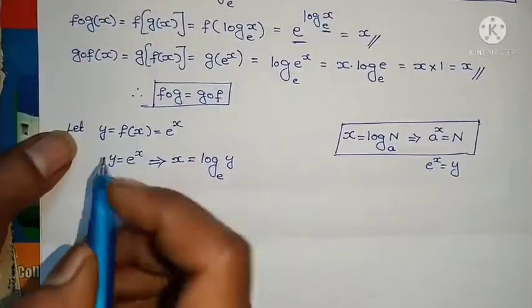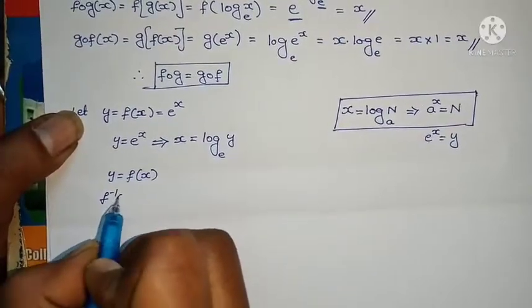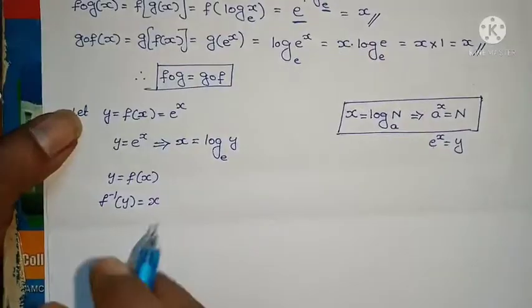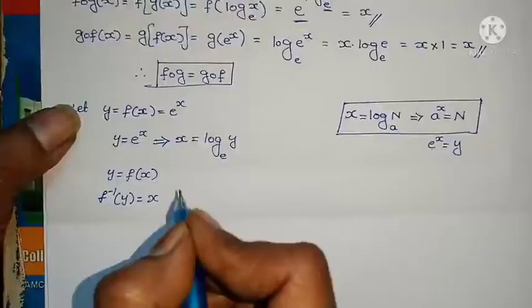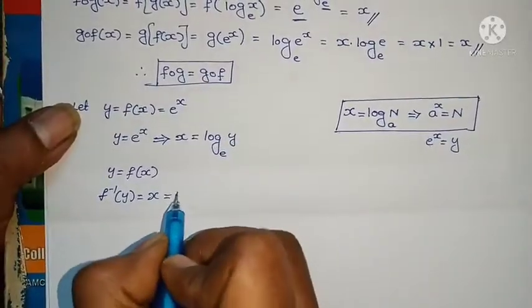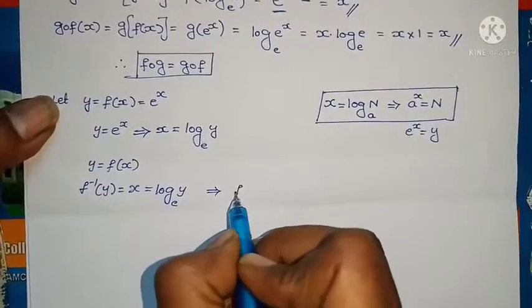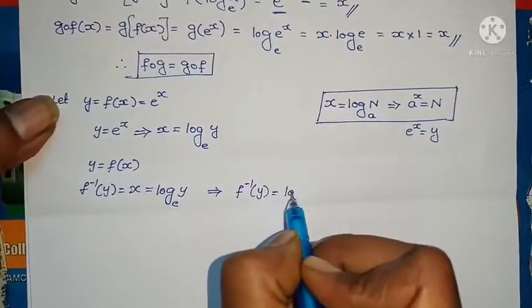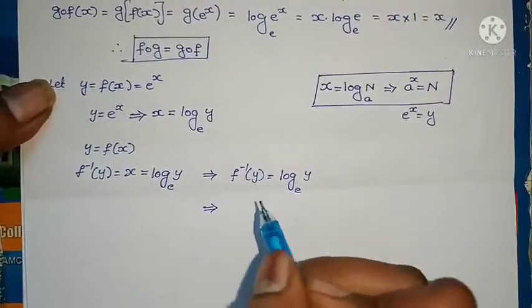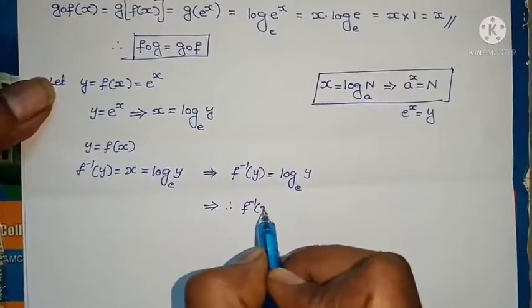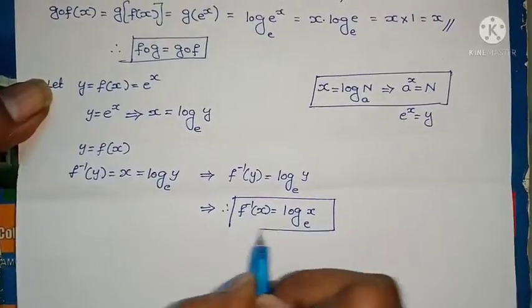Since y = f(x), we have f inverse of y = x. Moving f to the other side gives the inverse. f inverse of y = x, and we already found x = log_e(y). Therefore f inverse of y = log_e(y). Replacing y with x, f inverse of x = log_e(x).